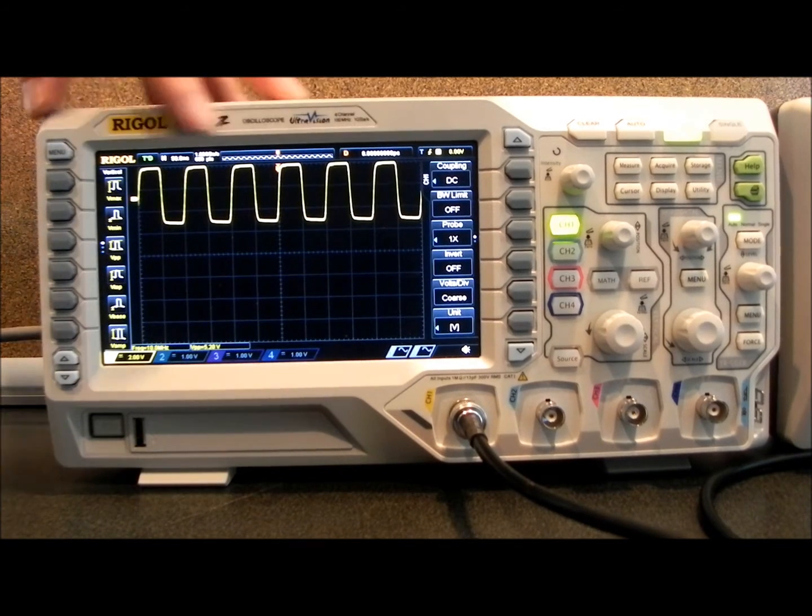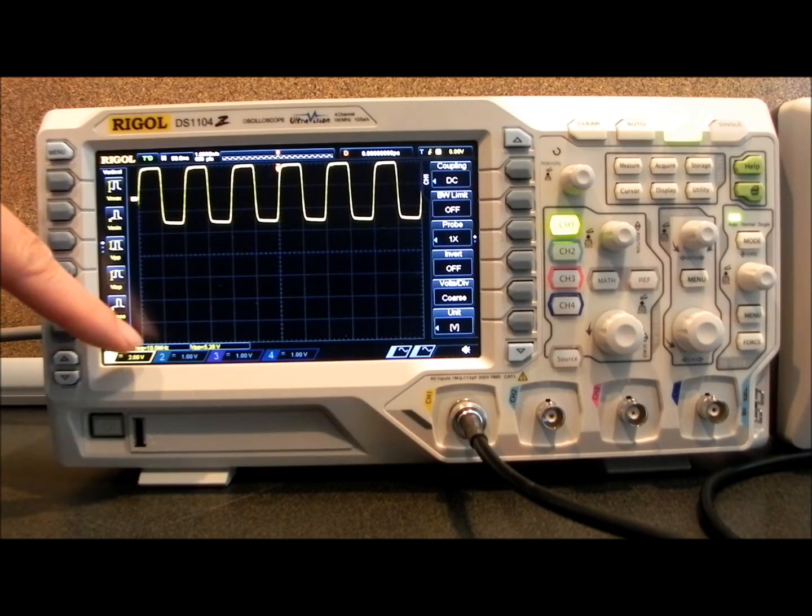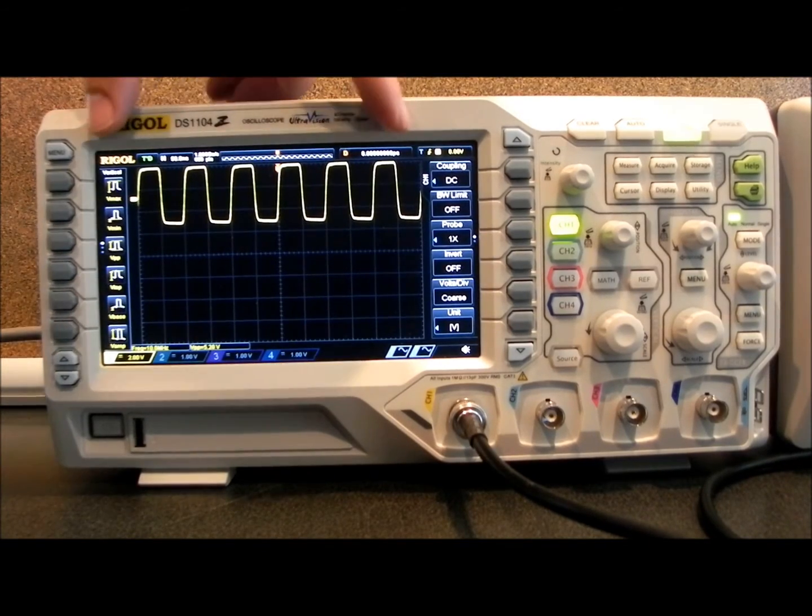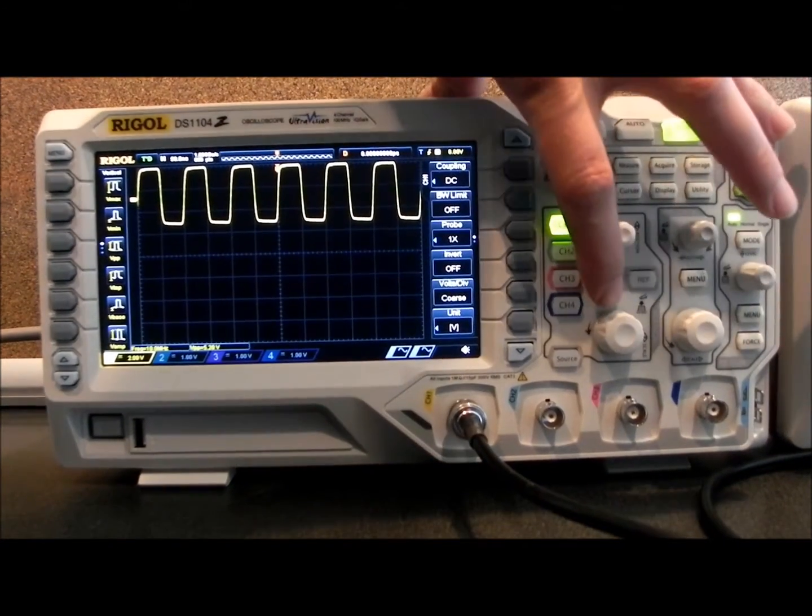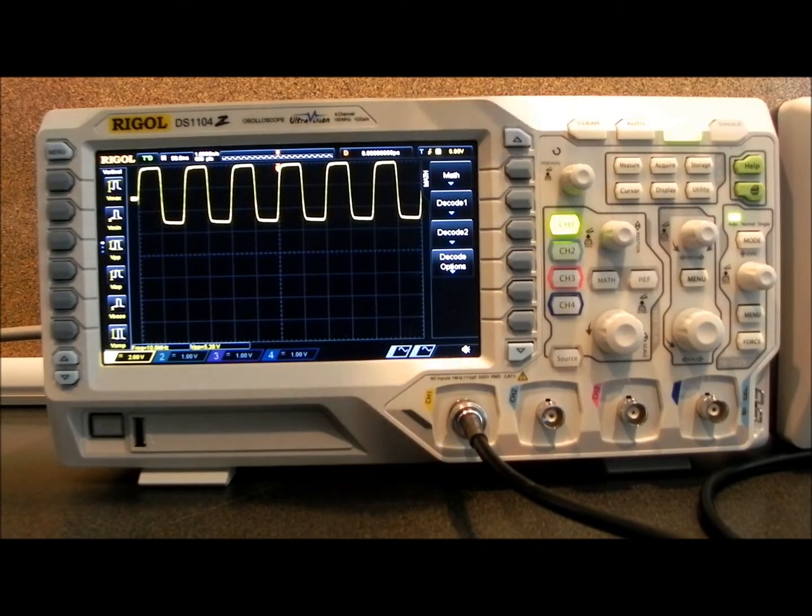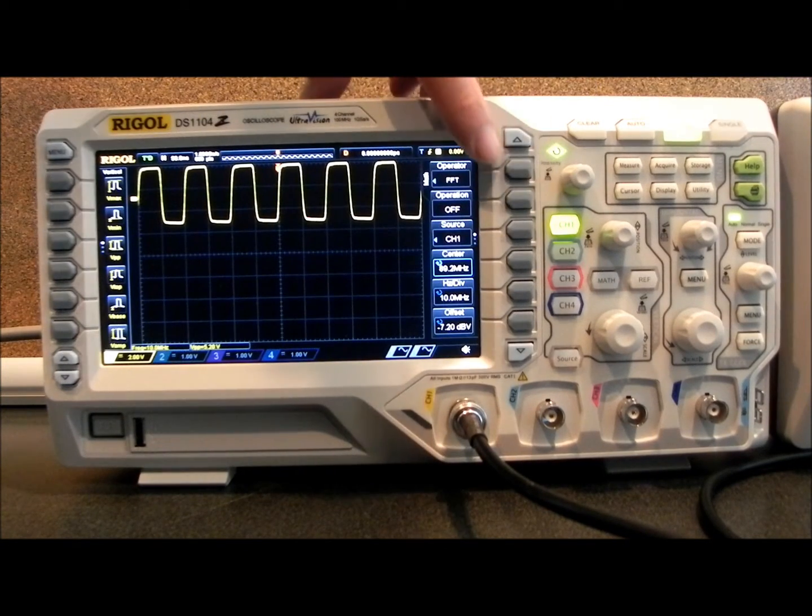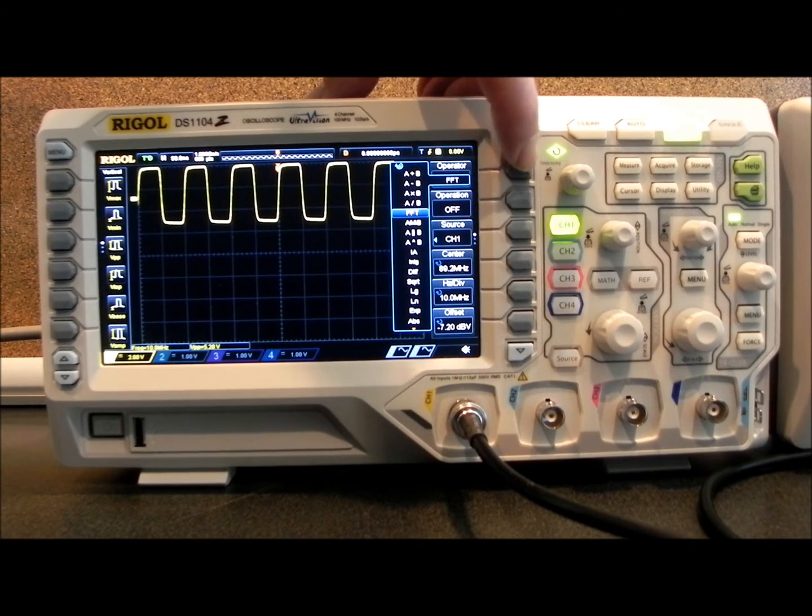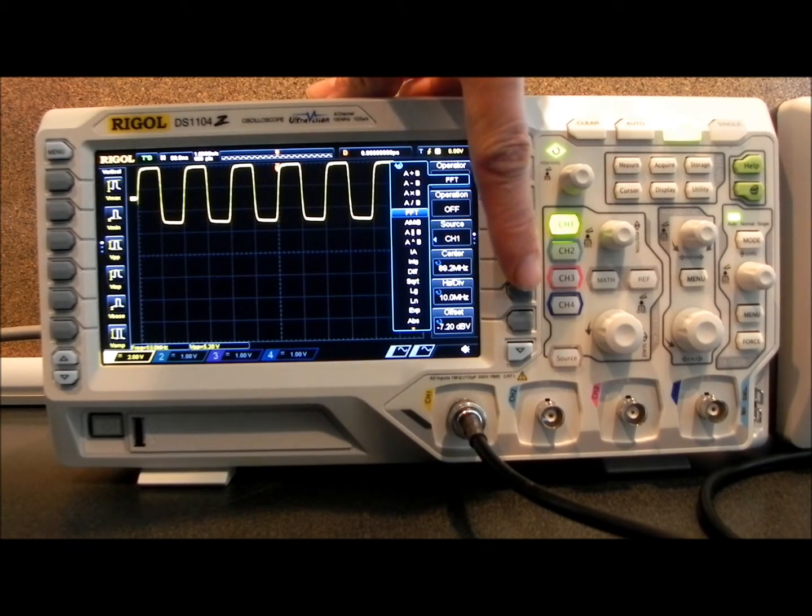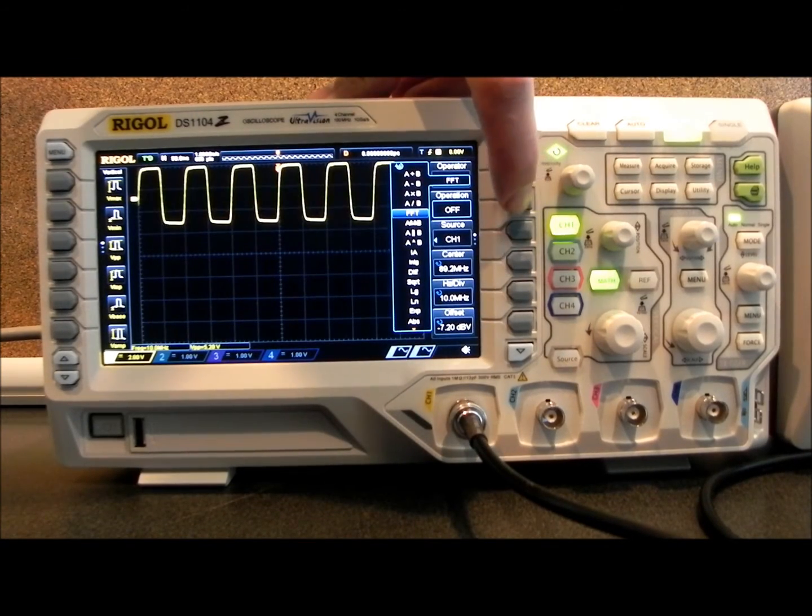In this case, I've got a 10 MHz signal coming in, you can read the frequency readout here. I'm going to press the MATH key, and then I'm going to enable MATH, set it up for FFT as the operation, then I'm going to turn the operation on.